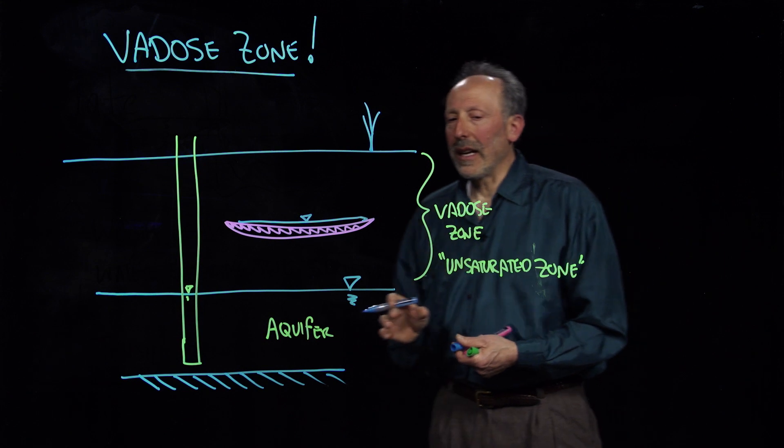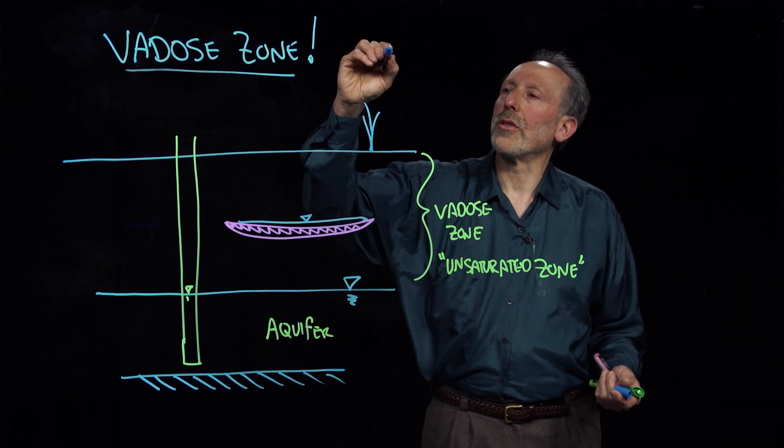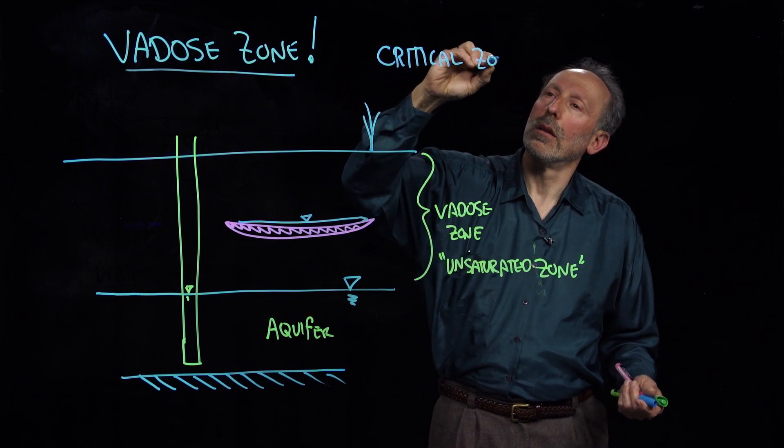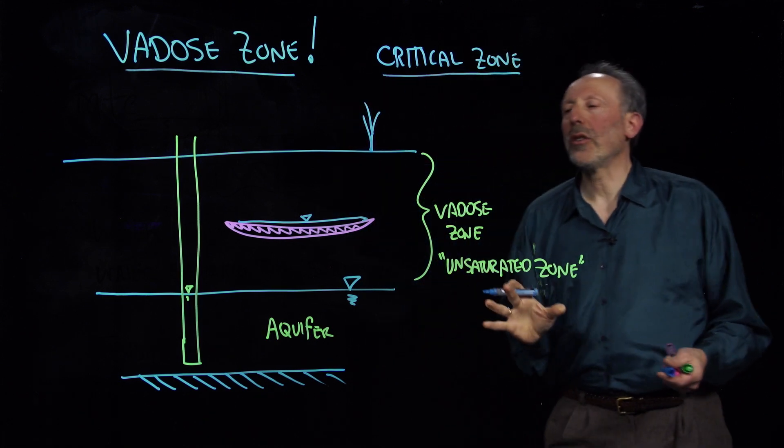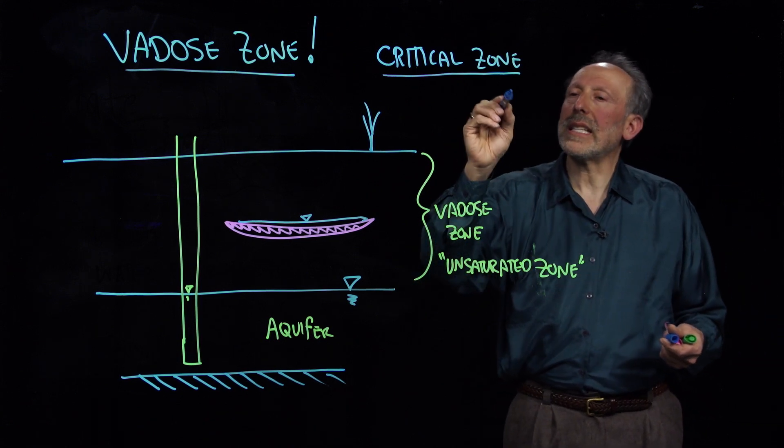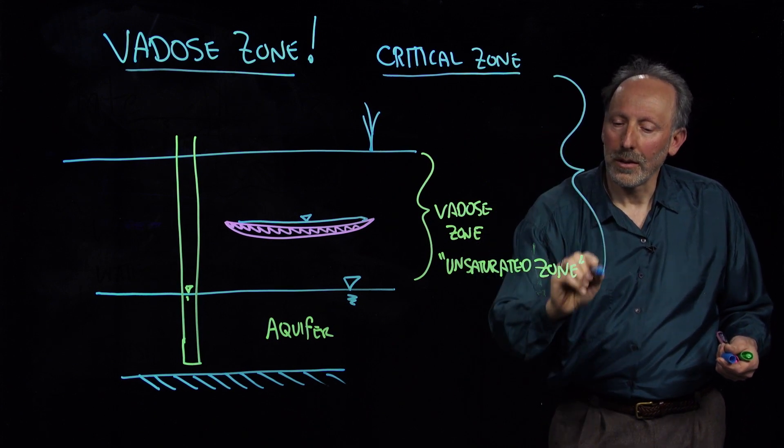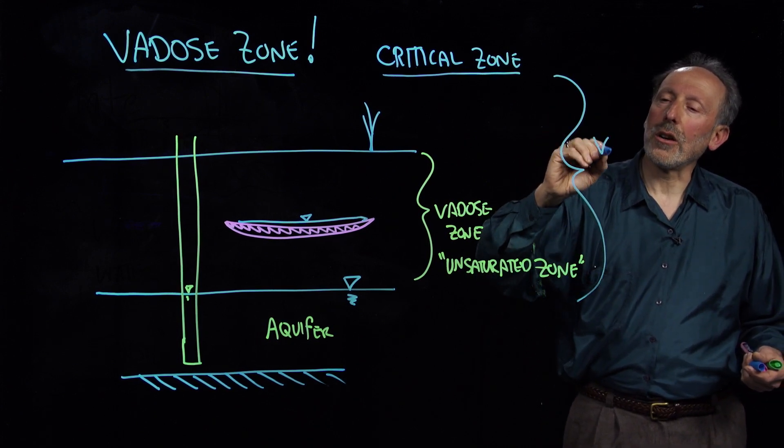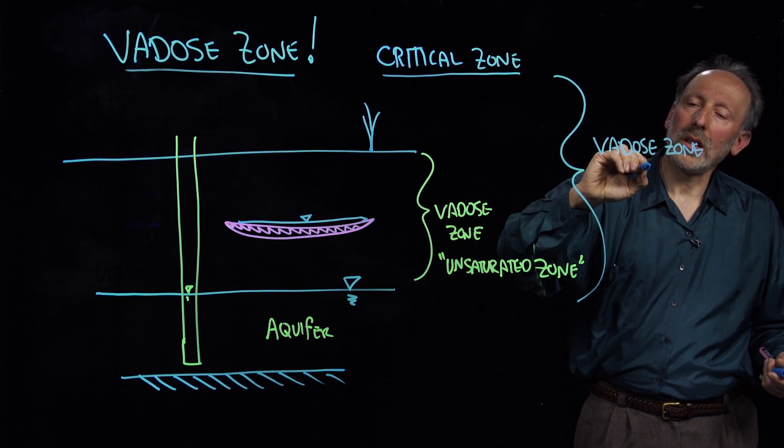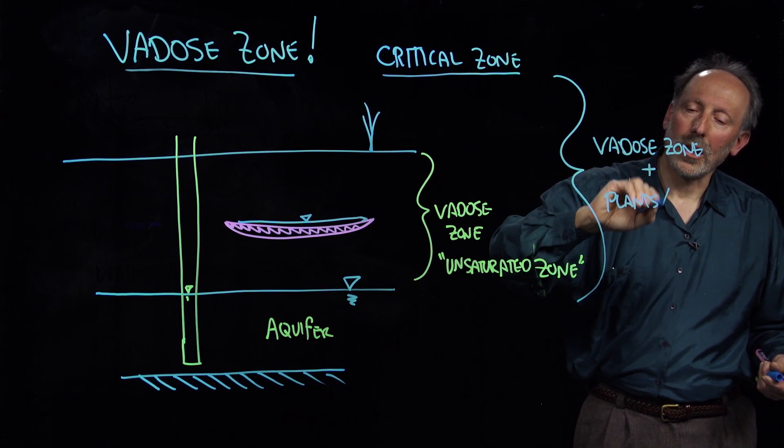Now this is another term that has come up of late that's quite popular, is the critical zone. And the critical zone is again somewhat loosely defined. But it essentially encompasses this region. So it is the Vadose Zone plus the plants and lower atmosphere.